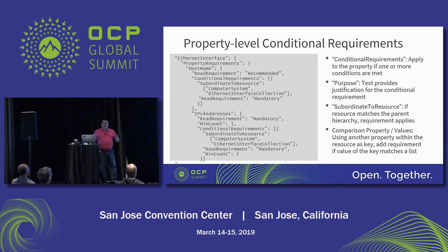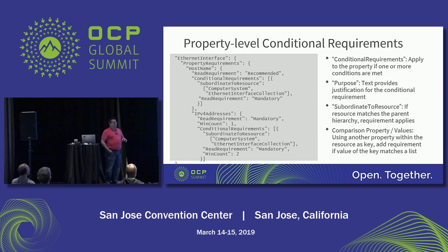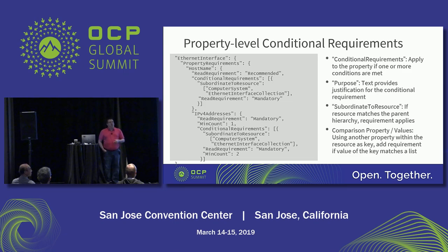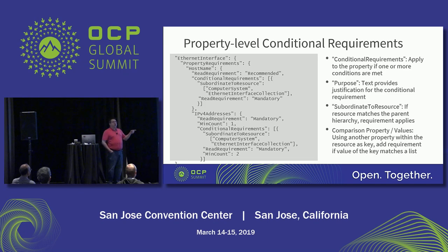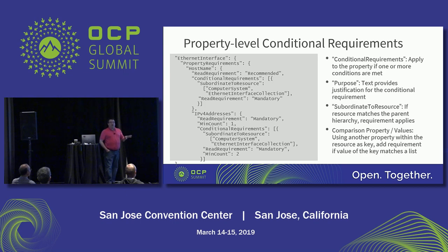The conditional requirements are the most complicated. They're a way to say: if you have this, or if this condition is true, then you have to have these things. This comes into play a lot with what we call "if implemented." I can't require you to have a fan, because if you are a liquid-cooled system you don't have any fans. We wouldn't want a liquid-cooled system to fail the OCP manageability profiles because they don't have fans. We also don't want someone to put a dummy fan object with no readings and fake data just to make the software happy.